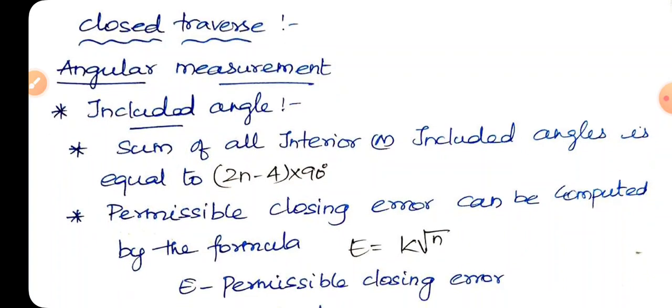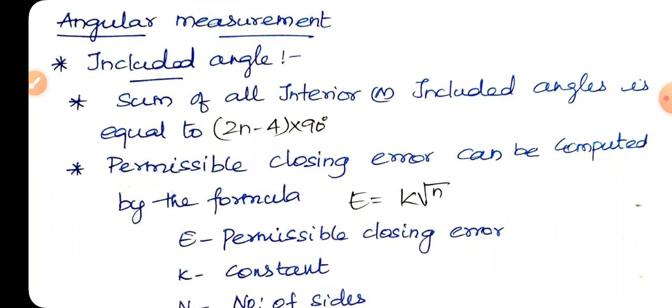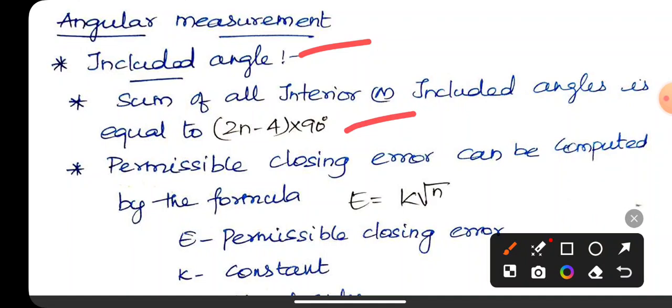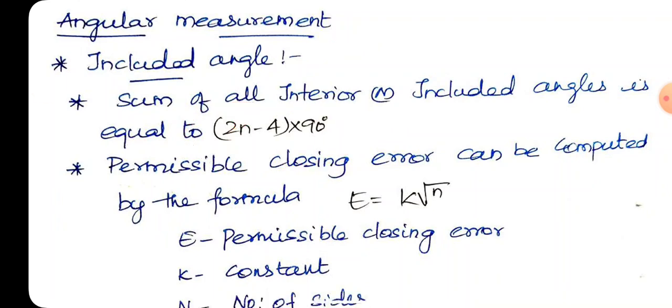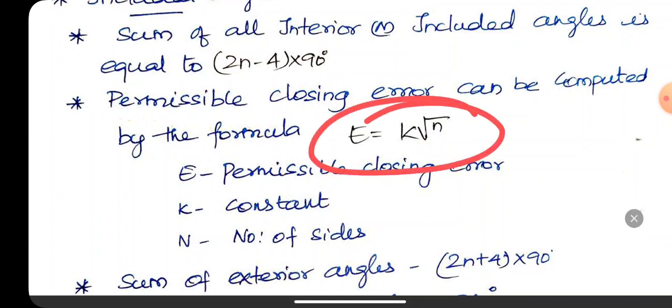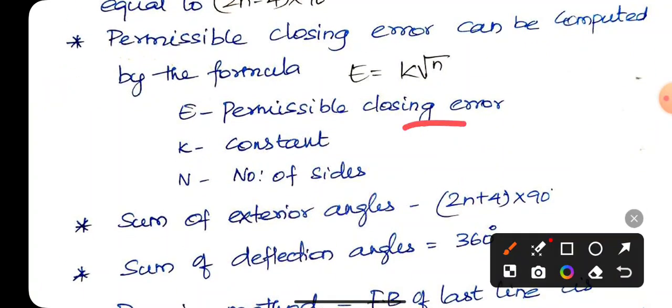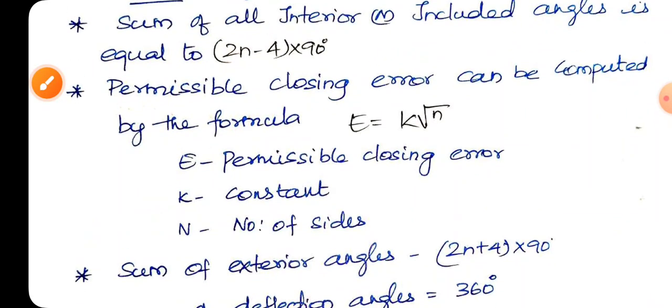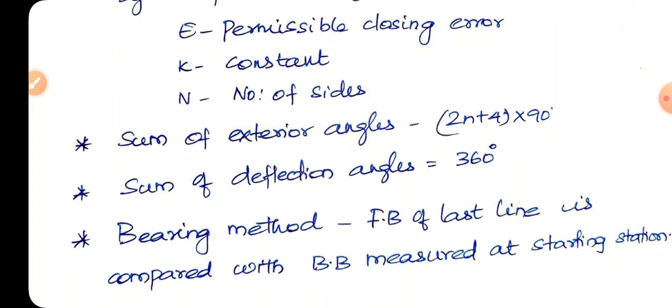Closed traverse angular measurement. Included or interior angle, formula 2n-4 into 90. This formula checks error. Permissible closing error e is equal to k root n, where k is constant and n is number of sides. Sum of the exterior angles 2n+4 into 90.